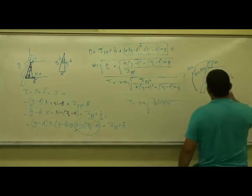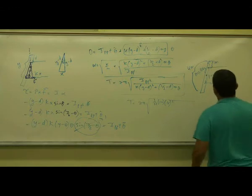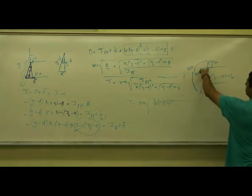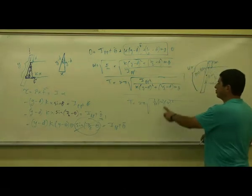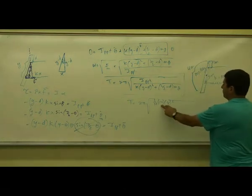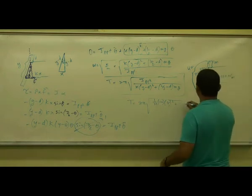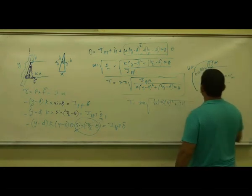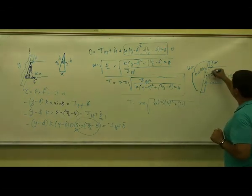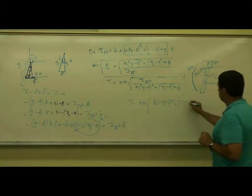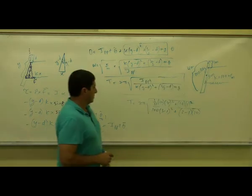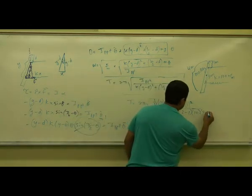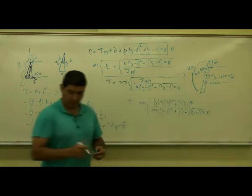We use the parallel axis theorem: (1/12)mL² for the center, then shift to the pivot. The center of the rod is at 2 meters, and the pivot is 1 meter from the end, so the shift is 1 meter. That gives us (1/12)(10)(4²) + (10)(1²). We also account for 10 kilograms times 9.8.